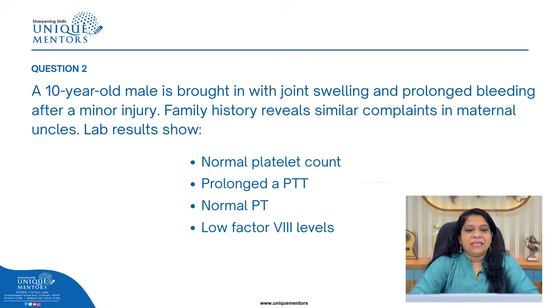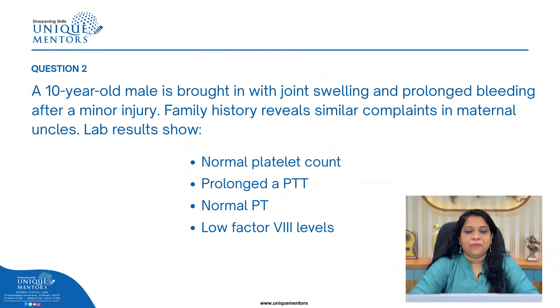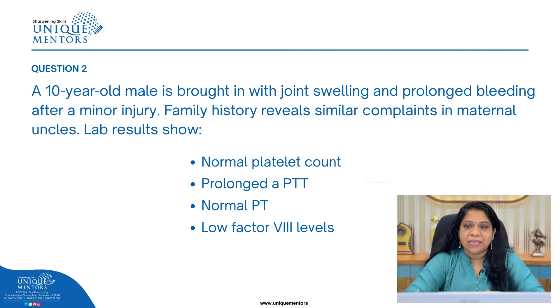Moving to the second question, which is a case study. A 10-year-old male is brought in with joint swelling and prolonged bleeding after a minor injury. Family history reveals similar complaints in the maternal uncles. Lab results show normal platelet count, prolonged APTT, normal PT, and low factor 8 levels. The clues are: male patient, prolonged bleeding, family history with maternal uncles affected — indicating an inherited bleeding disorder with a deficient factor.